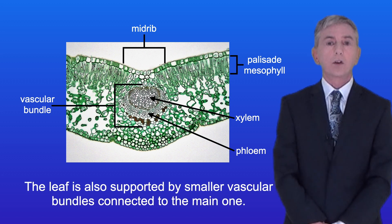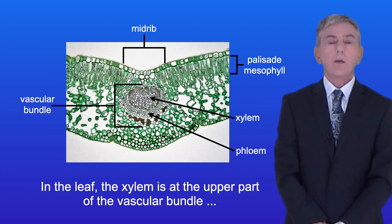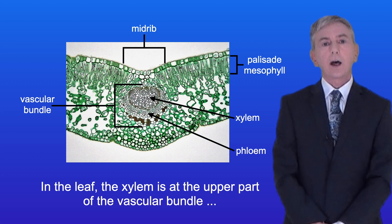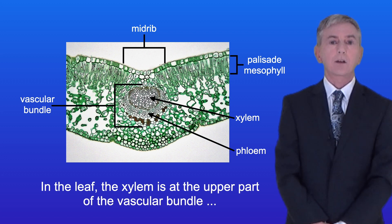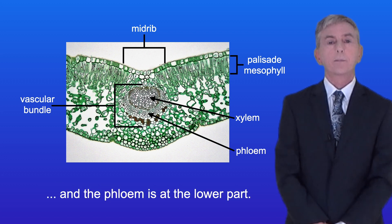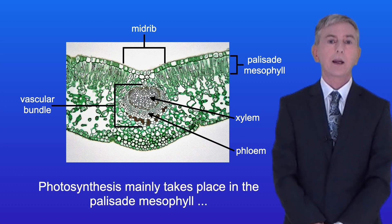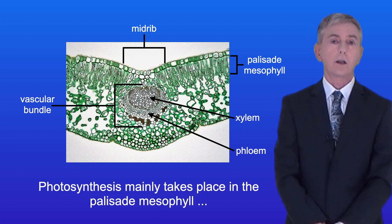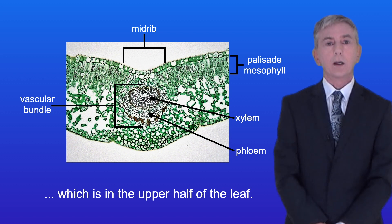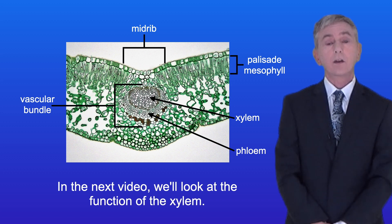The leaf is also supported by smaller vascular bundles connected to the main one. In the leaf, the xylem is at the upper part of the vascular bundle and the phloem is at the lower part. Photosynthesis mainly takes place in the palisade mesophyll, which is in the upper half of the leaf. In the next video we look at the function of the xylem.